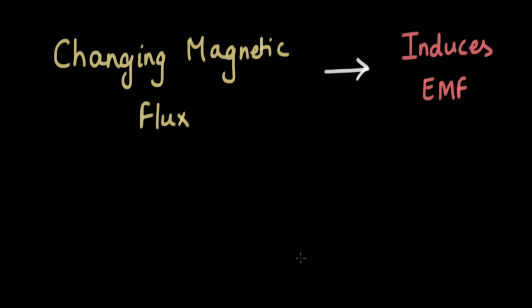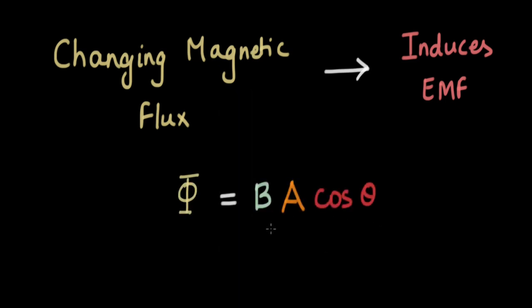In previous videos, we looked at how changing magnetic flux through a closed loop or a coil induces a certain amount of EMF or current. In this video, let's predict if a certain amount of EMF is generated for a bunch of cases where magnetic flux is changing. Magnetic flux is B·A·cos(θ), and we can change it by changing the magnetic field strength, the area of the coil, or the angle between the magnetic field and the area vector.